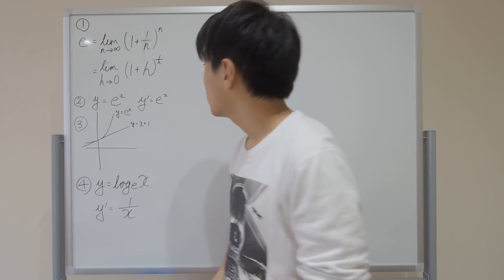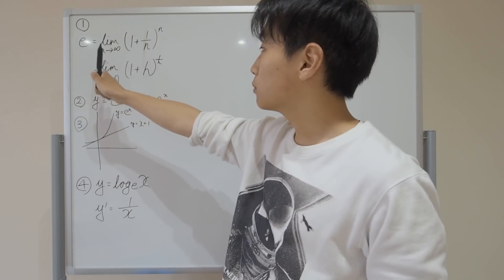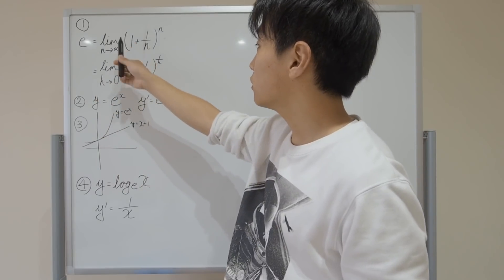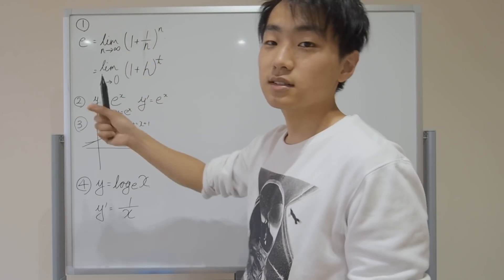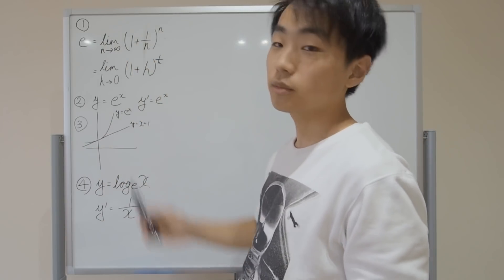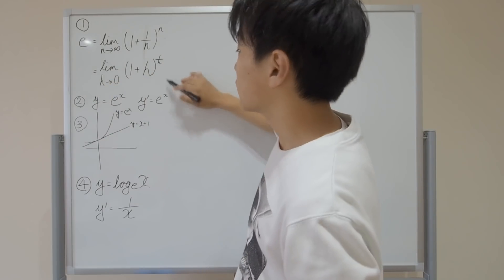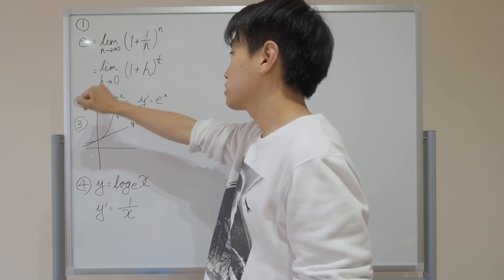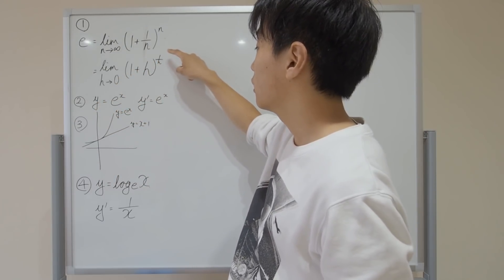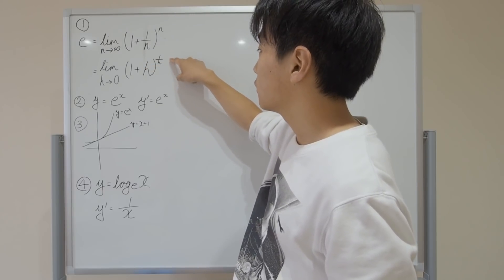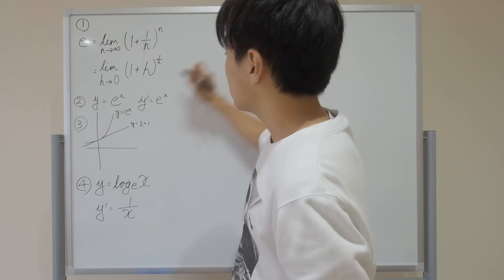To begin with, I'm going to talk about the definition of e. E is defined as the limit as you bring n to close to infinity of 1 plus 1 over n, raised to the power of n. Basically, you're adding just a tiny little bit to 1, and then multiplying that infinite times. I've also rewritten this with h approaching 0, where it becomes 1 plus h to the power of 1 over h — exactly the same thing — and I'll use that later.